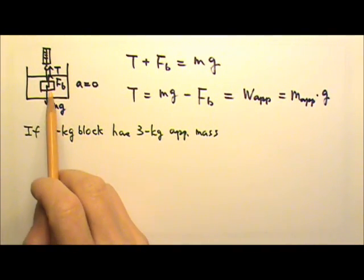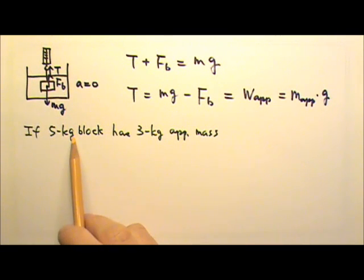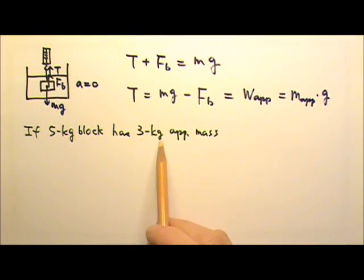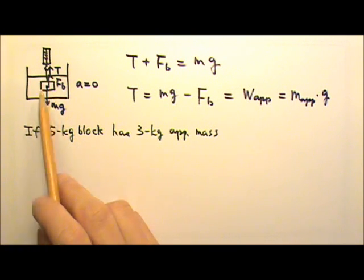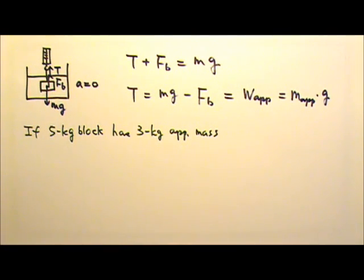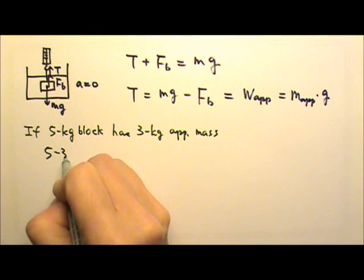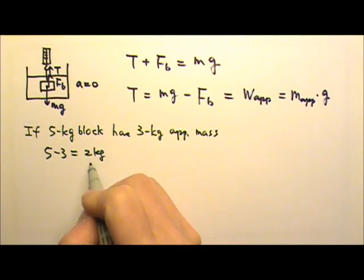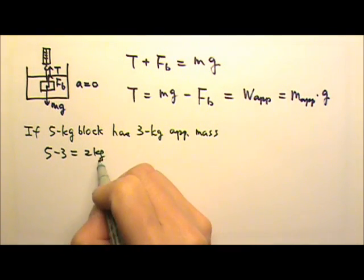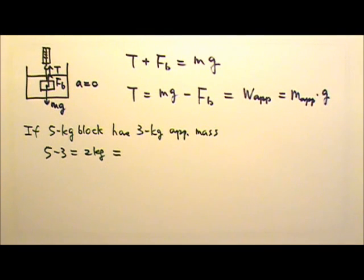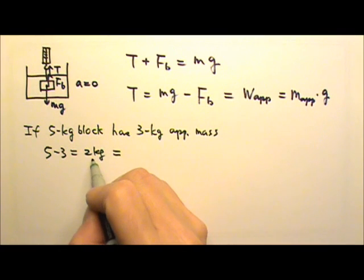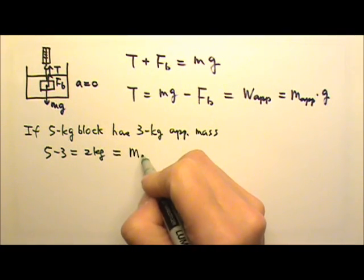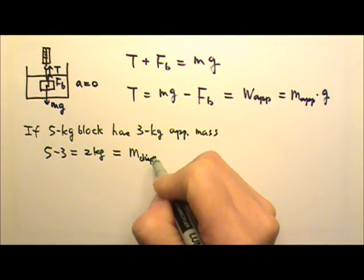So if this block is actually 5 kg, but it has a 3 kg apparent mass when completely submerged, that means the difference — 5 minus 3 — is 2 kg. It got 2 kg lighter because of the buoyant force. So this must be the equivalent mass for the buoyant force, which means this is the mass of the displaced fluid.